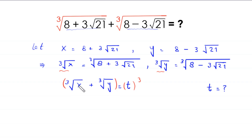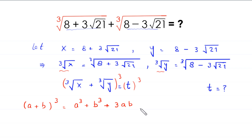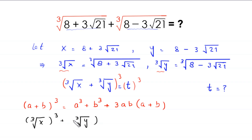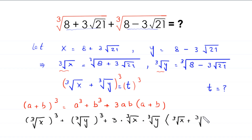By using the algebraic identity (a plus b) cubed equals a cubed plus b cubed plus 3ab(a plus b), the left-hand side becomes: cube root of x, cubed, plus cube root of y, cubed, plus 3 times cube root of x times cube root of y times (cube root of x plus cube root of y), equal to t cubed.